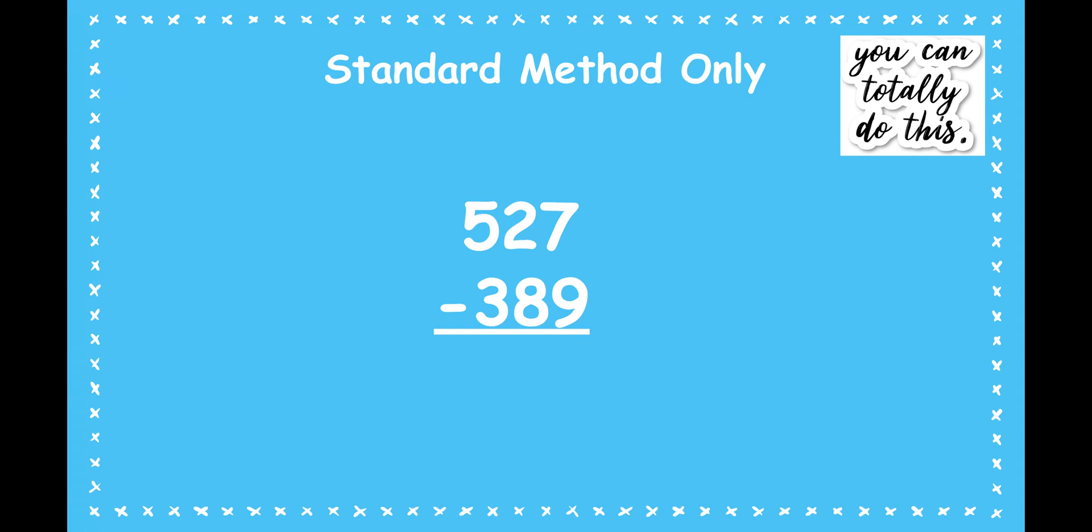All right, here we go. 7 minus 9 in the ones place. I can't do that. I have more on the floor. I'm going to go to the tens place. Take a 10. That will leave me 1 ten. I'll take the 1 ten that I just get, that gives me 10 ones plus the seven ones. So now I have 17 ones minus the nine ones makes eight.